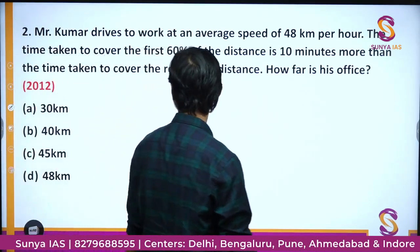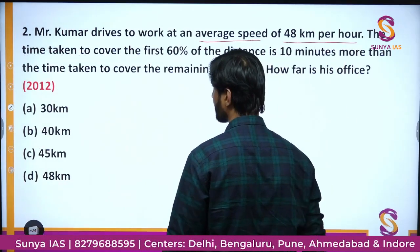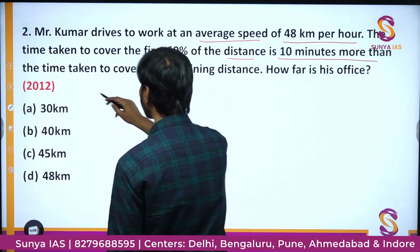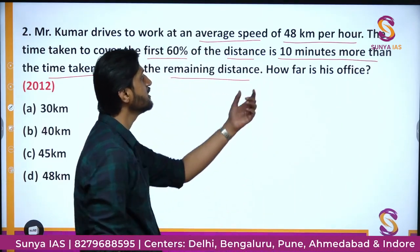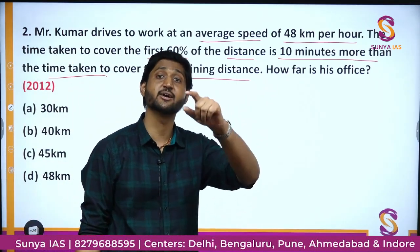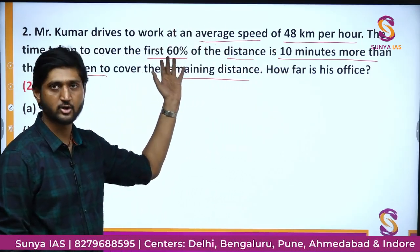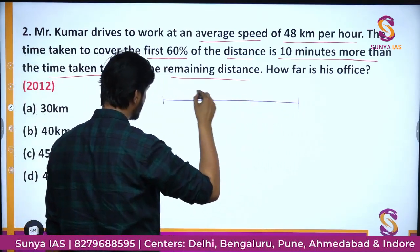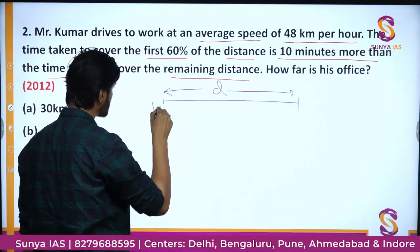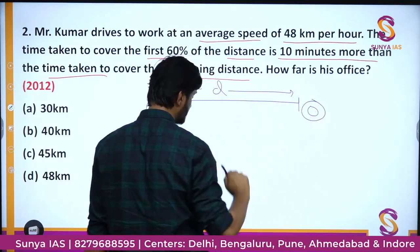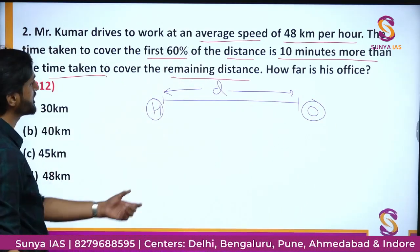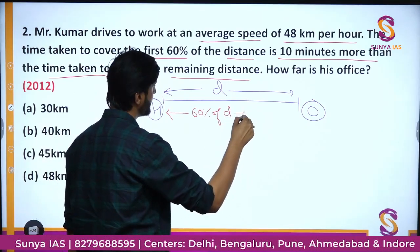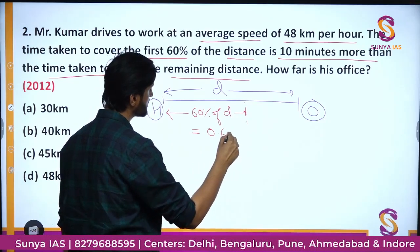Next question: Mr. Kumar drives to work at an average speed of 48 kilometers per hour. The time taken to cover the first 60 percent of the distance is 10 minutes more than the time taken to cover the remaining distance. How far is his office from his home? Let me draw a diagram. The total distance D goes from home to office. We can separate it into two parts: 60 percent of D, which is 0.6D, and the remaining 40 percent, which is 0.4D.